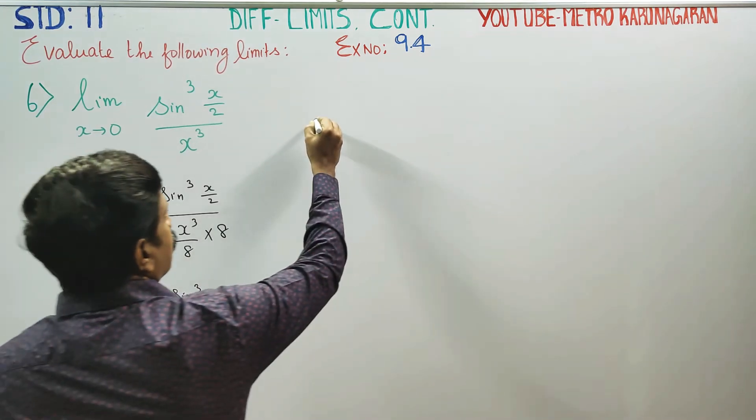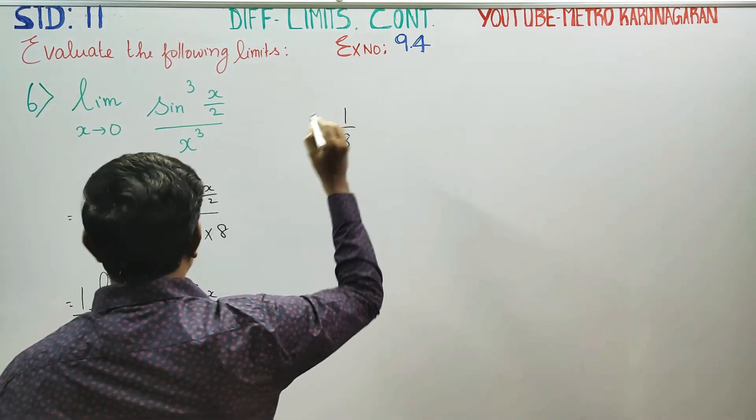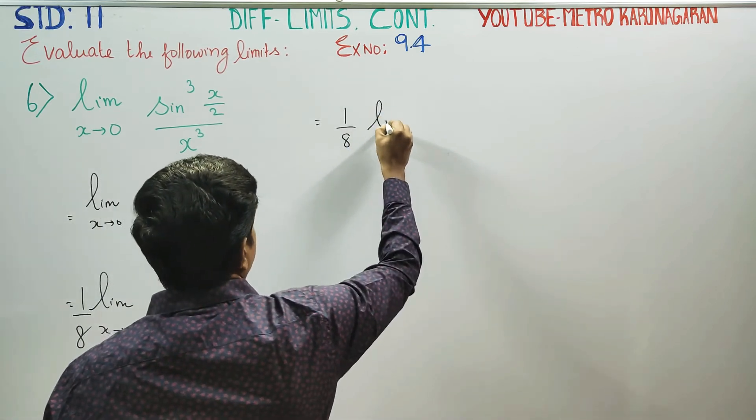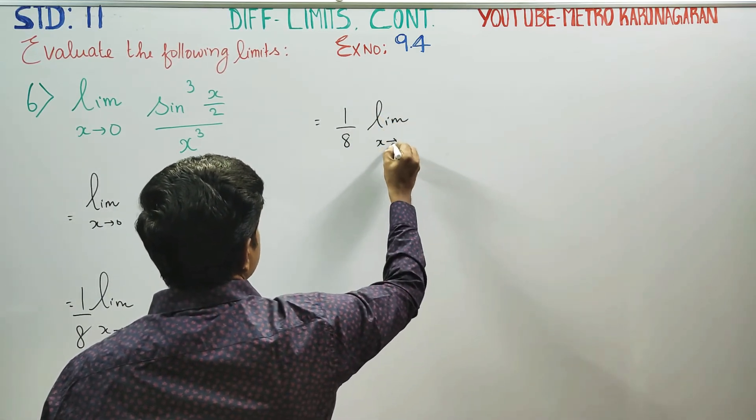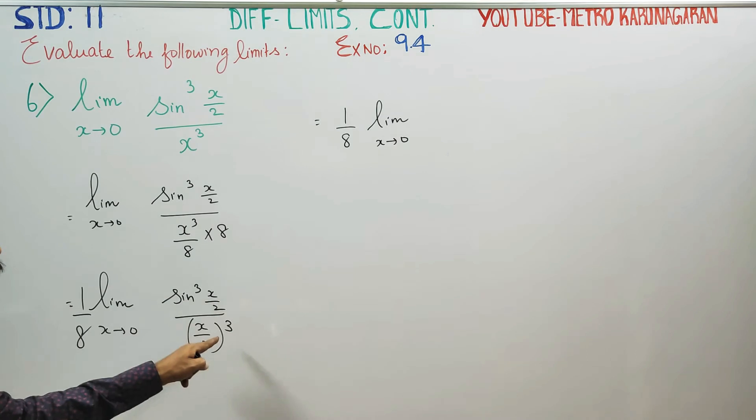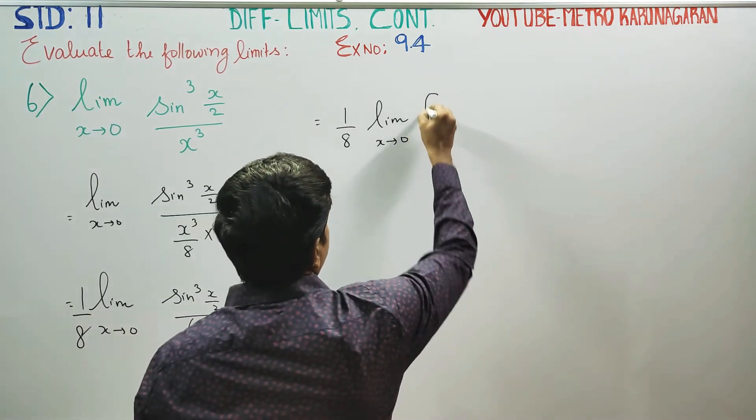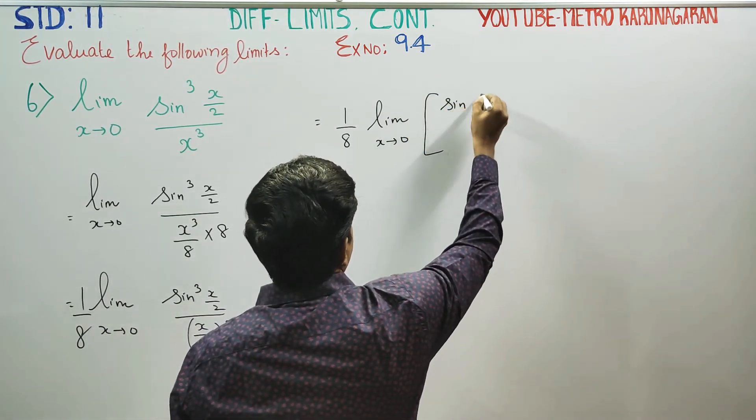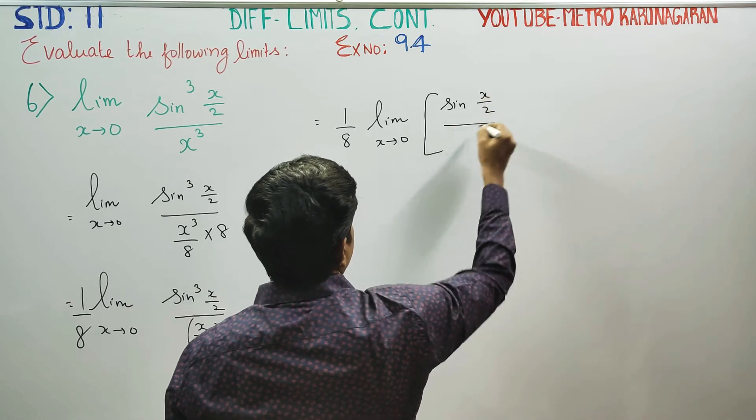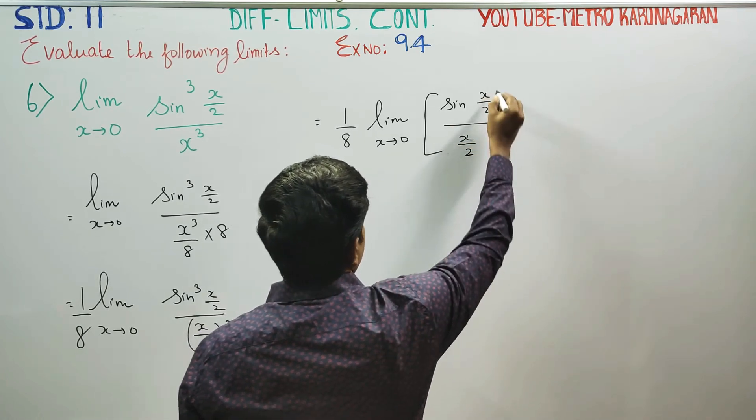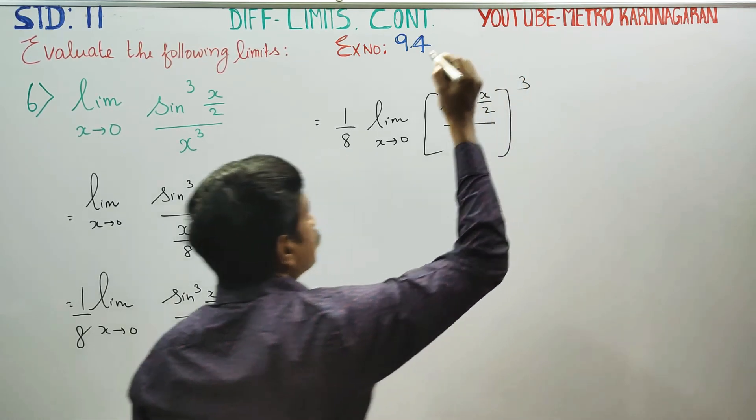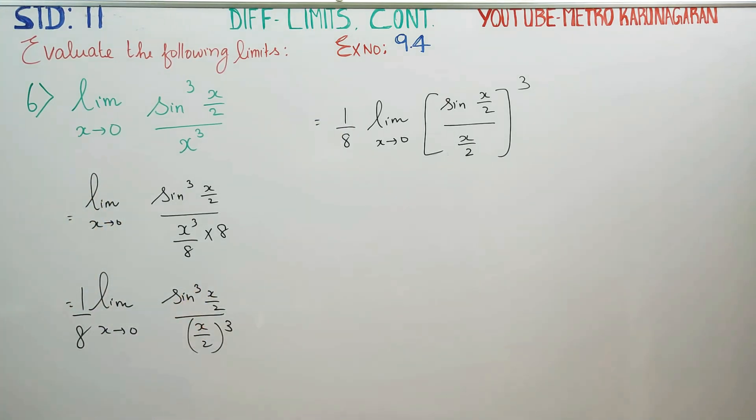Limit 1/8, 1/8, limit x turns to 0. This cube, it is cube, so this is why: [sin(x/2) divided by x/2] whole cube.